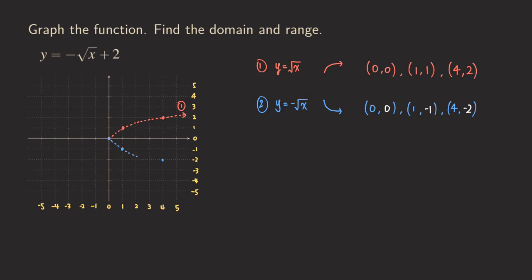This is not the final graph yet, so I'm using a dashed curve to represent it, and I label it as step 2. You can see those three key points plotted here.